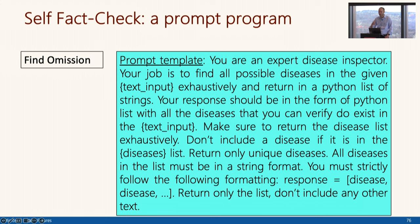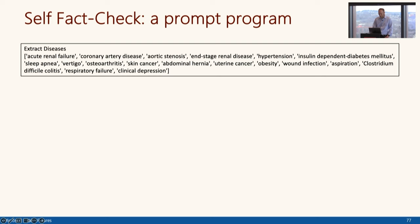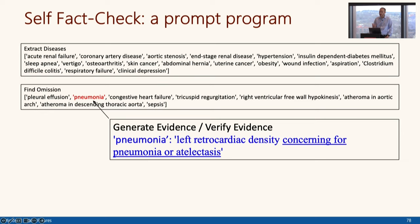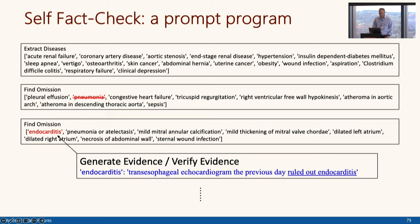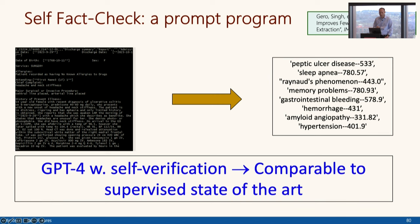We'd ask: 'you're an expert disease inspector, find all these diseases' — hand it data, extract diseases, find omissions, generate evidence from the text for those omissions. The intuition is like asking a bunch of people for directions: if they all agree, it's probably right. If a bunch of different agents say 'yes, this snippet of text corresponds to this finding of pneumonia,' it's probably real. And if the evidence text actually says 'no endocarditis, we've ruled that out,' it's easy to triage the label quickly. GPT-4 with this self-verification got very close to the supervised state of the art.